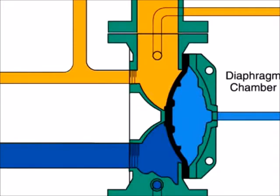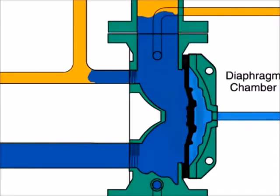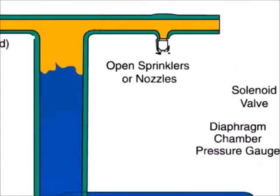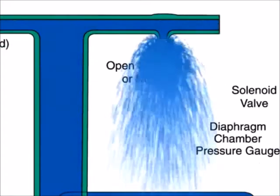The rapid pressure drop in the diaphragm chamber forces the diaphragm open allowing water to spray out of the sprinklers or nozzles.